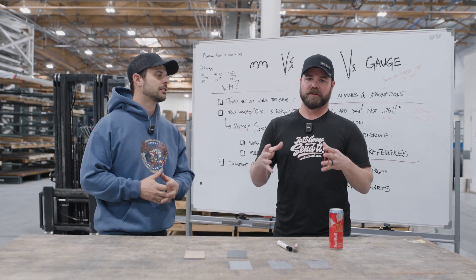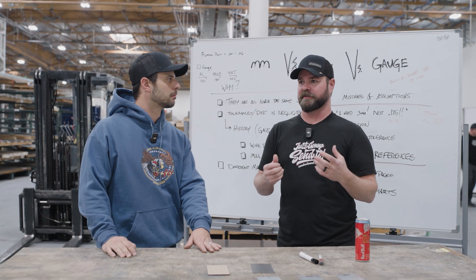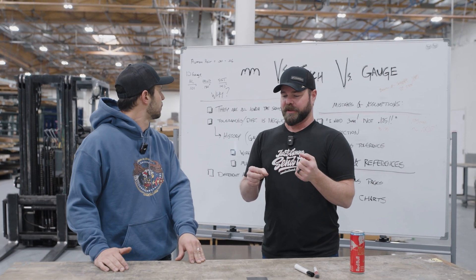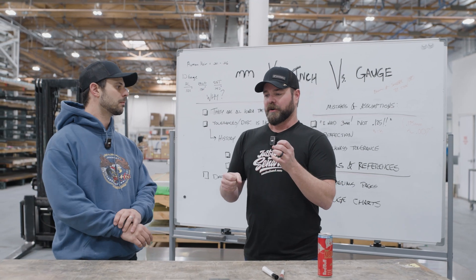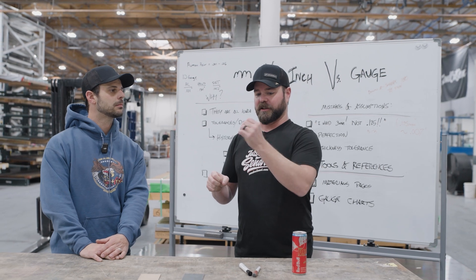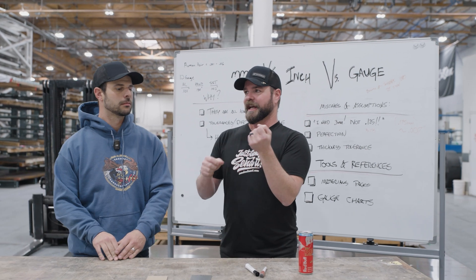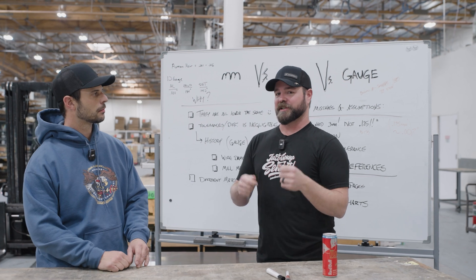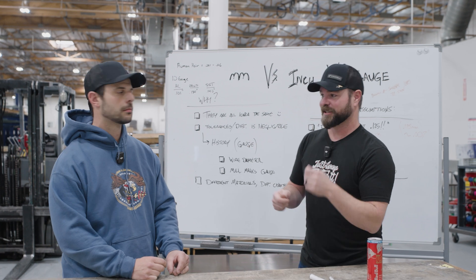Gauge is a weird holdover from the early days of manufacturing when they needed standards to define wire size. In the early 1800s, people decided they needed to spec out a known wire diameter, so they came up with a standard. They started with size zero, meaning a very large wire that doesn't need to be drawn through a die to thin it out. Then every time you go through a die to make it thinner, they'd call it a gauge. So seven-gauge wire means it went through a die seven times to reach the desired diameter.